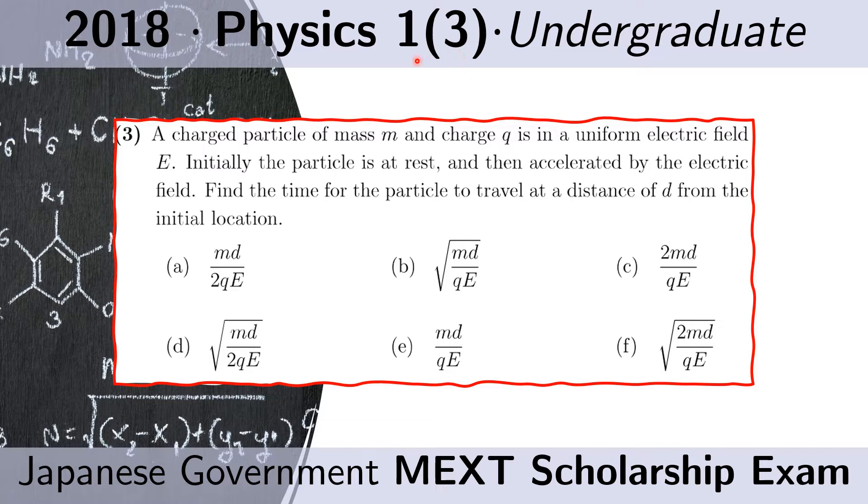Problem 3 of 1. A charged particle of mass M and charge Q is in a uniform electric field E. Initially, the particle is at rest and then accelerated by the electric field. Find the time for the particle to travel at a distance of D from the initial location.